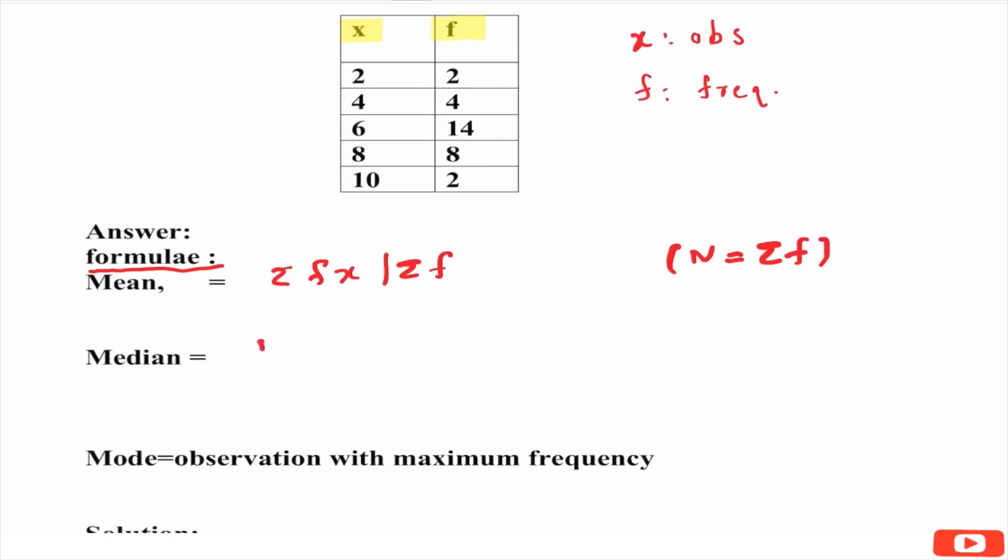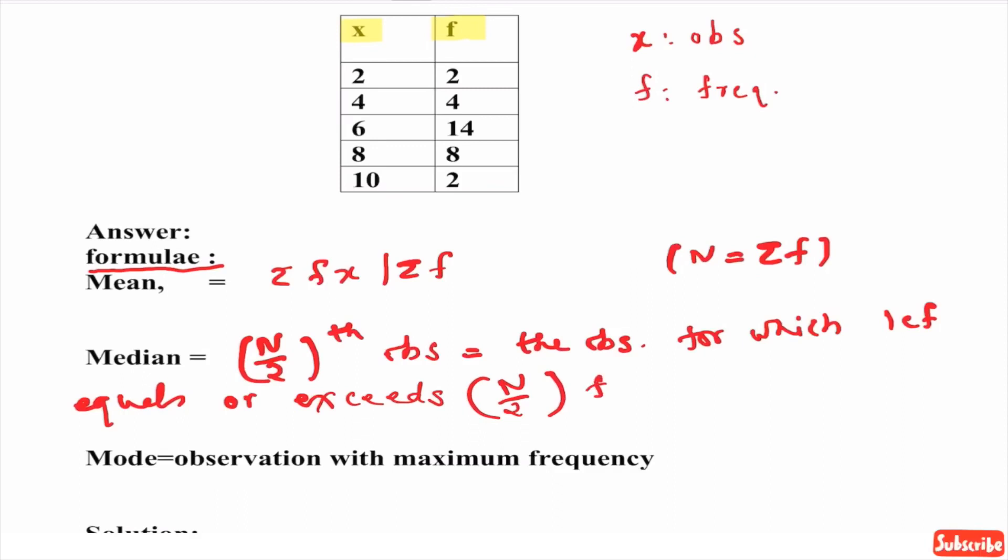Median is N by 2 observation. How to find N by 2 observation? That is the observation for which LCF, that is less than cumulative frequency, equals or exceeds N by 2 observation.